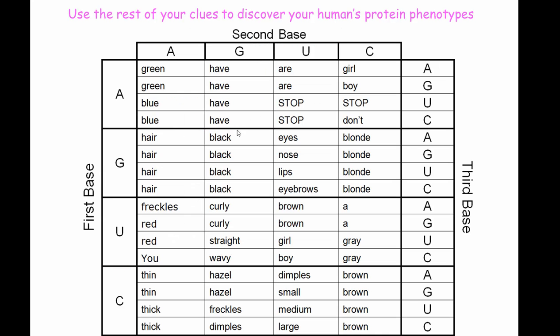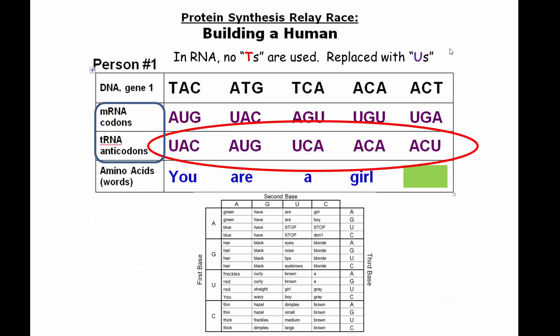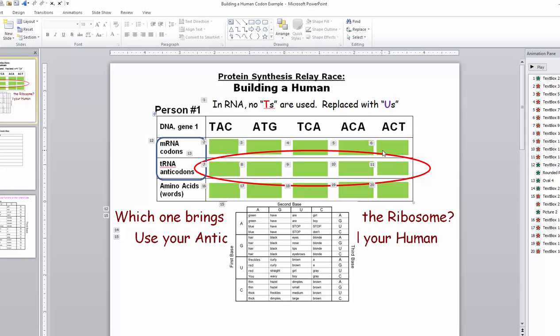Then you use the rest of these keys and clues given to you to discover a human's protein phenotype. Phenotype is how it's expressed in the human — like the gender would be a girl — even though the actual genotype was ACA. So that's what we're going to be doing with this activity.